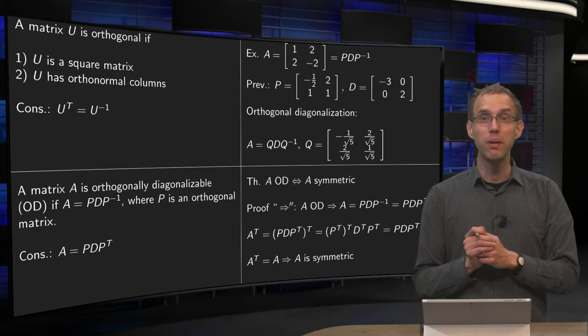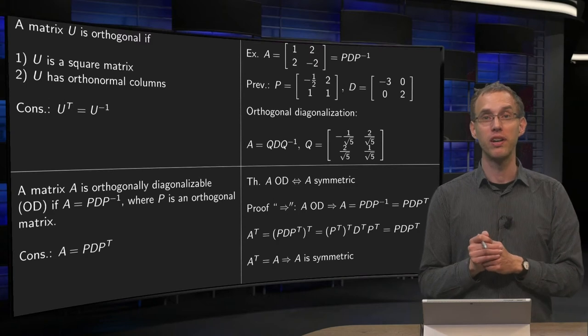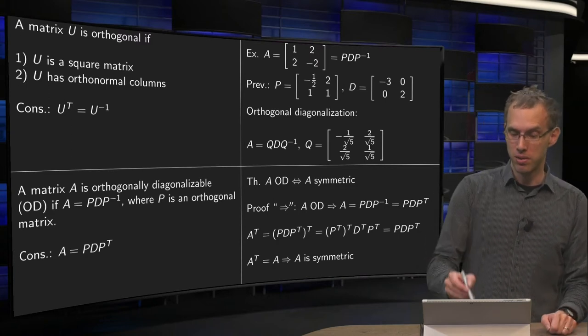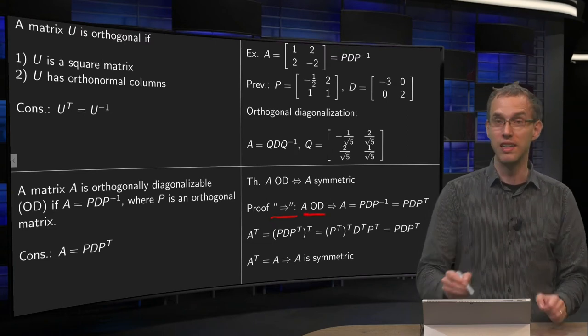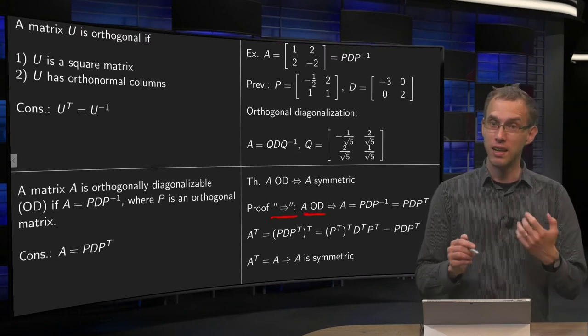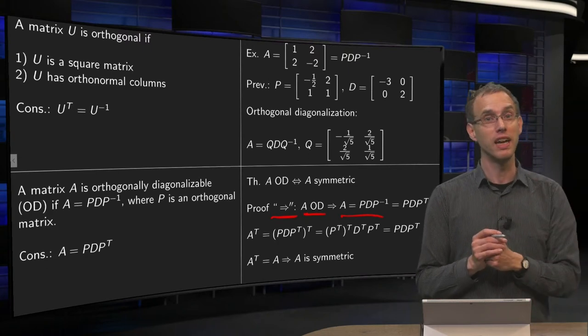A matrix is orthogonally diagonalizable if and only if A is symmetric. So symmetric matrices are the only matrices that are orthogonally diagonalizable and vice versa. Well, one implication of the theorem is easy to prove, so we will do that straight away. The other one requires a lot more work.